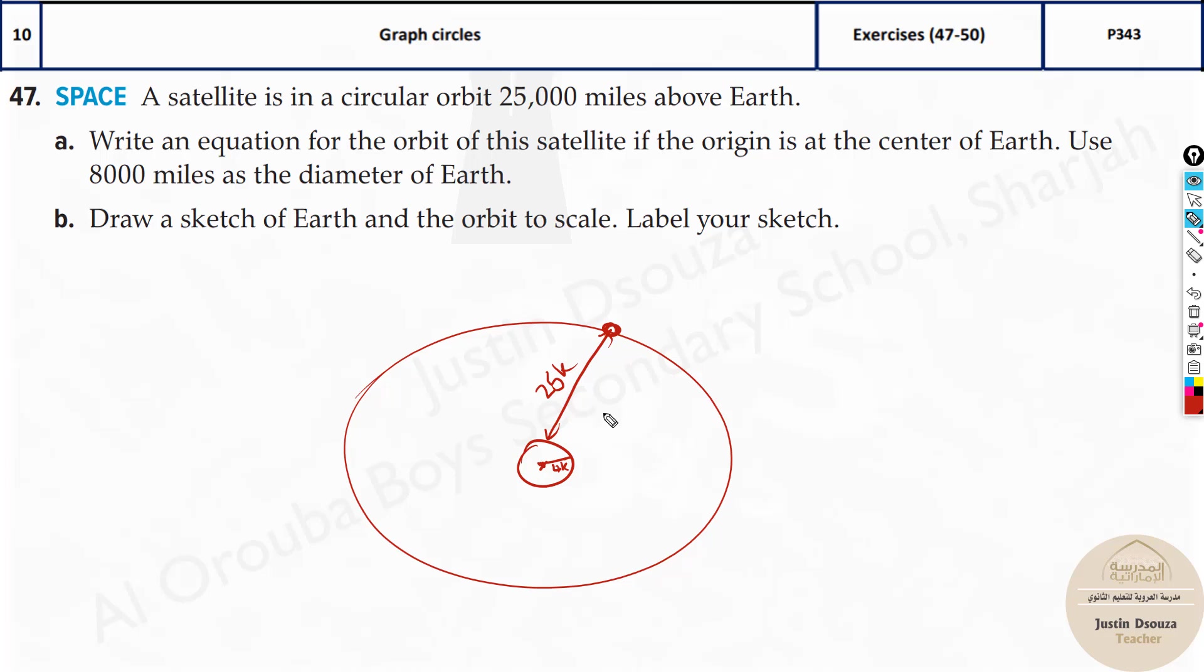Now what is the equation of the circles? It's the easiest equation. It's (x - h)² + (y - k)² = r². Now since it is at the center of the origin of the earth, it will be (0, 0). So we just write this equation x² + y² = r².